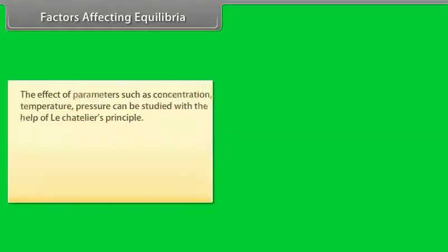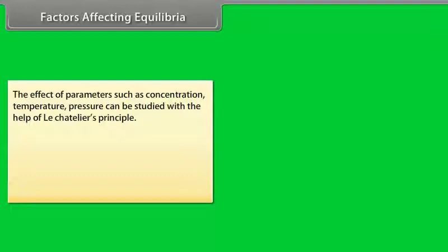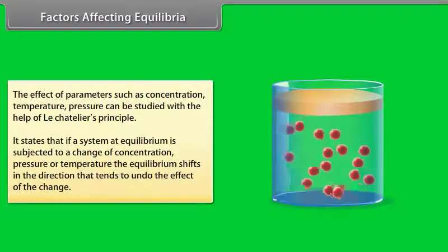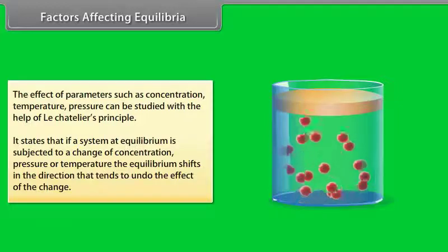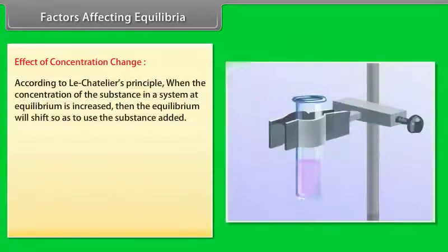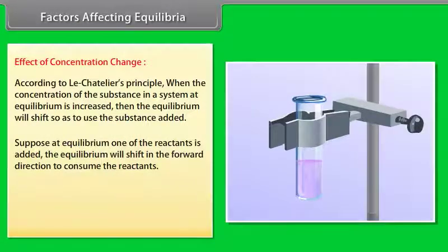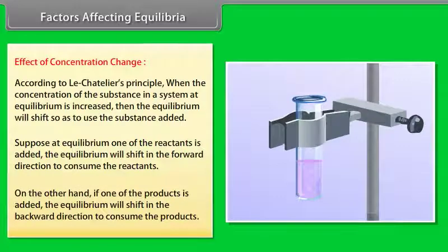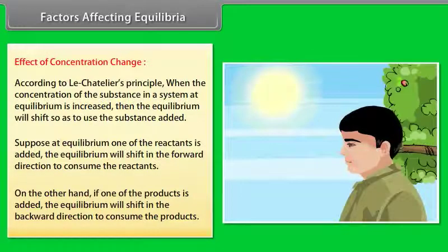Factors affecting equilibria: The effect of concentration, temperature, and pressure can be studied using Le Chatelier's principle, which states that if a system at equilibrium is subjected to a change of concentration, pressure, or temperature, the equilibrium shifts in the direction that tends to undo the effect of the change. Effect of concentration change: When concentration of a substance is increased, equilibrium shifts to consume that substance. Adding a reactant shifts equilibrium forward; adding a product shifts it backward. For example, on a humid day we sweat more because the surrounding air has a large amount of water vapour.